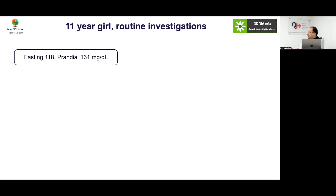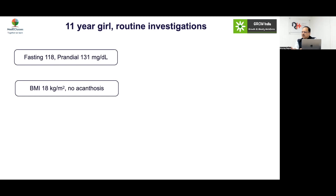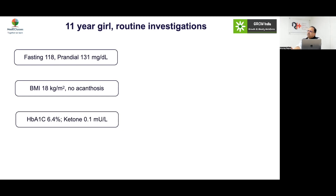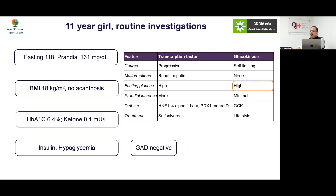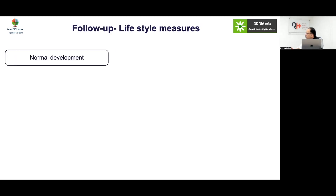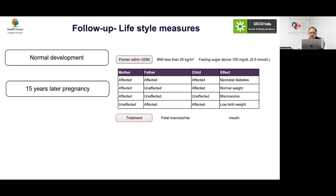Case: An 11-year-old non-obese girl with slightly high fasting glucose, mildly elevated post-prandial glucose, no acanthosis, HbA1c of 6.4%, and negative ketones — typical of a GCK defect. Insulin would cause hypoglycemia in these patients. GAD is negative and there is usually a family history in the mother or father, so familial screening is important. Management involves lifestyle measures, with normal development expected.